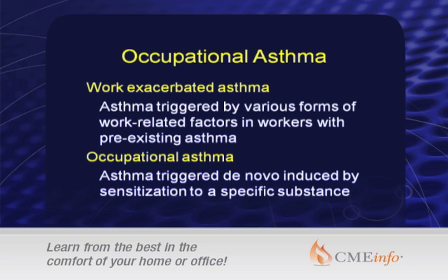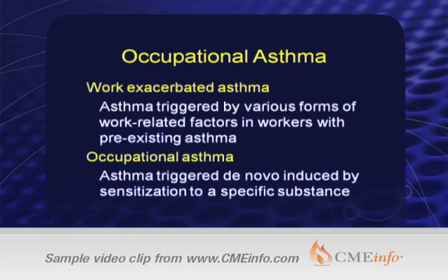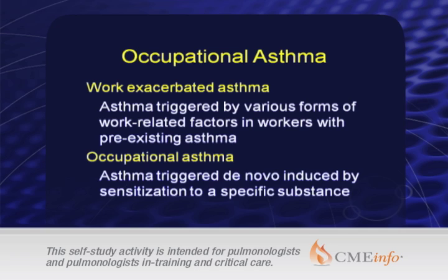The other point to remember is that in the workplace, asthmatics can have their asthma exacerbated by the workplace. There are two terms that are important here. Number one is work-exacerbated asthma — where asthma is triggered by various work-related factors in workers with pre-existing asthma. Oftentimes, this may be the most common presentation of somebody with asthma that is worsened by the workplace.